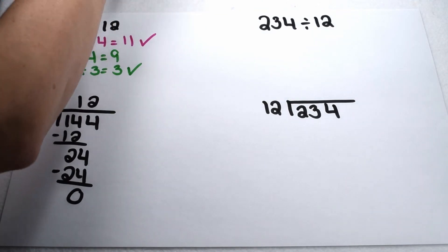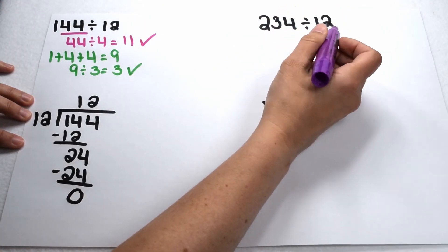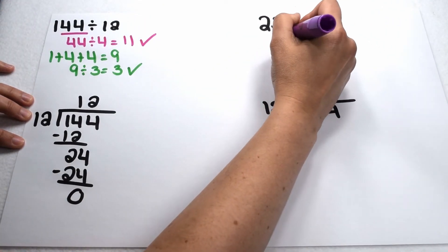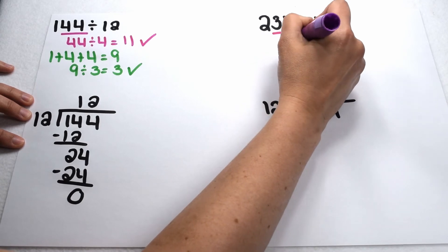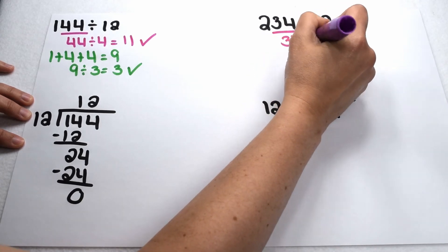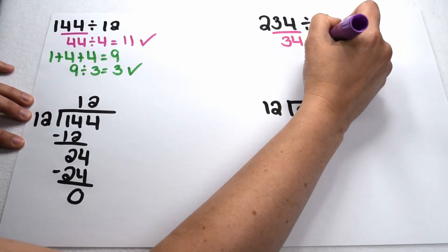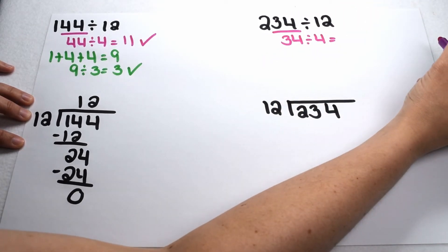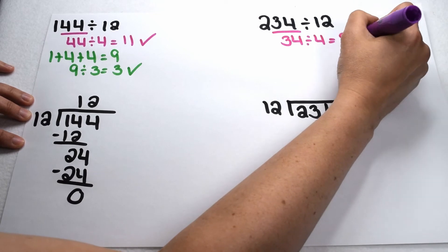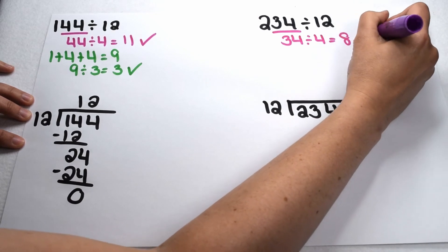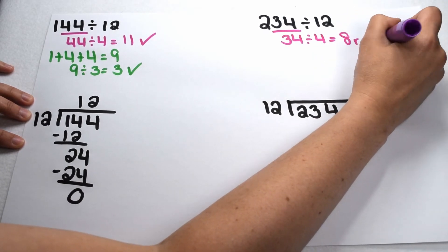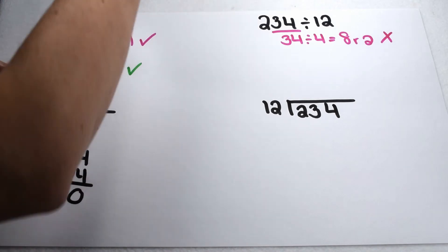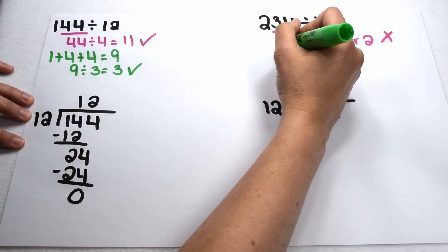Let's test this on another example: 234 divided by 12. Let's start by checking to see if it's divisible by 4 — my last two digits will be divisible by 4 if so. 34 divided by 4 gives me 8 remainder 2. So that tells me 234 is not going to be divisible by 4.